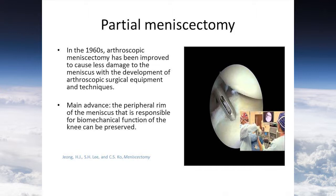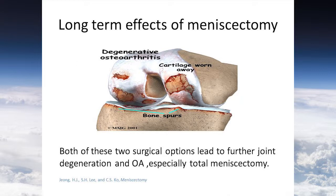In the 1960s, arthroscopic meniscectomy was improved to cause less damage, with the development of surgical equipment and techniques. The major advantage of this partial meniscectomy is that it can preserve the peripheral rim of the meniscus, which is responsible for the biomechanical functions of the knee joint. But the long-term effects of both surgical options lead to further joint degeneration and osteoarthritis, especially with meniscectomy.